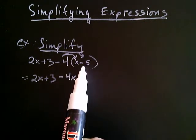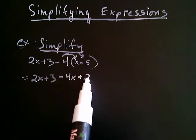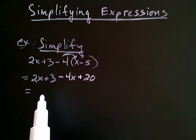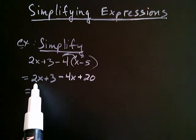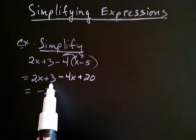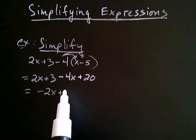And then a negative 4 times a negative 5 is positive 20. So, once you've distributed, now you can combine like terms. So, 2x minus 4x is negative 2x. 3 plus 20 is 23.